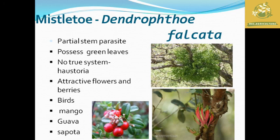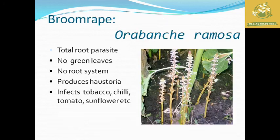Mistletoe only absorbs water from the host plant and does not have a true haustorial system. It also has attractive flowers and berries. Birds are said to be the vector and transmitter of these diseases. It is a major parasitic plant on host plants like mango, guava, and sapota.